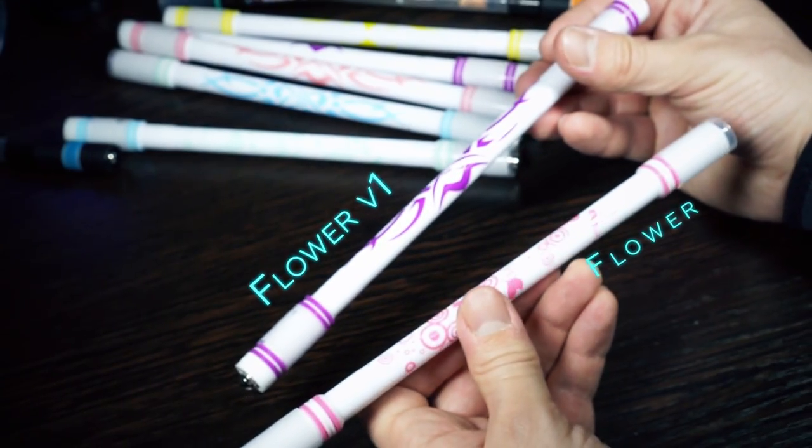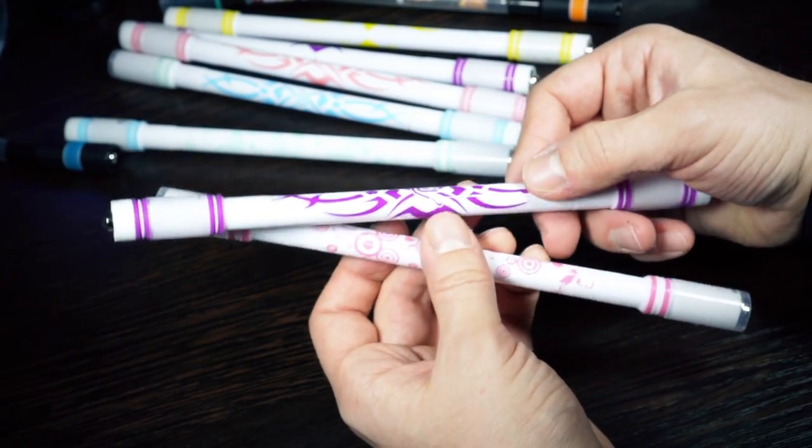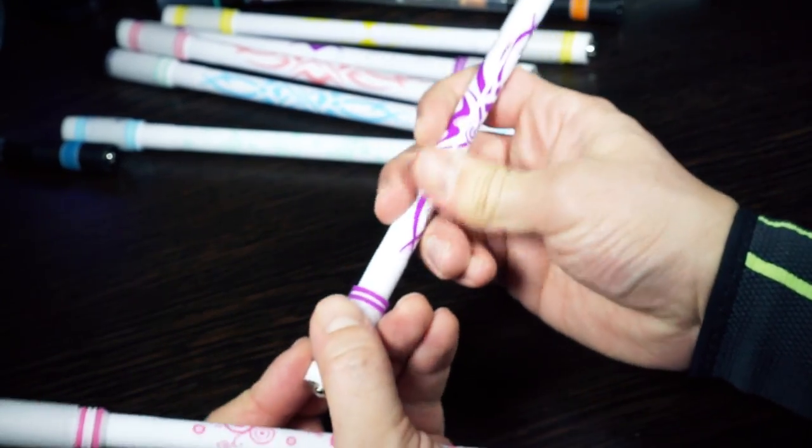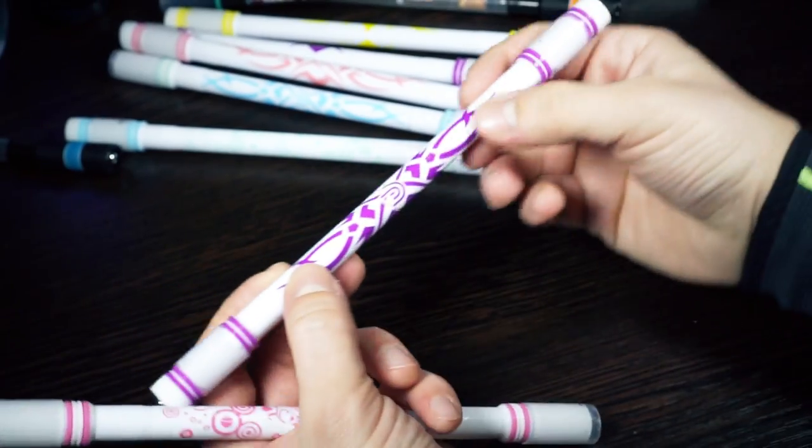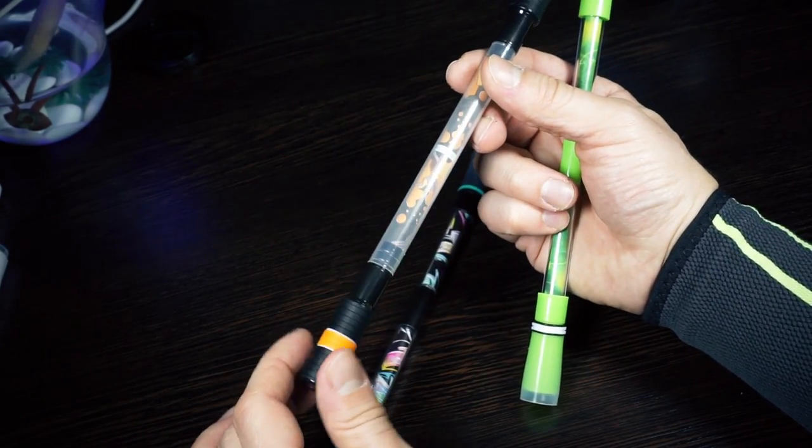V1 and V4 have very solid printing on their bodies, very solid. I was trying to erase it for some time and nothing happens to body. That means, that mods are going to look new for quite a long time. V2 and V3 don't have printing on bodies, but they have inserts.